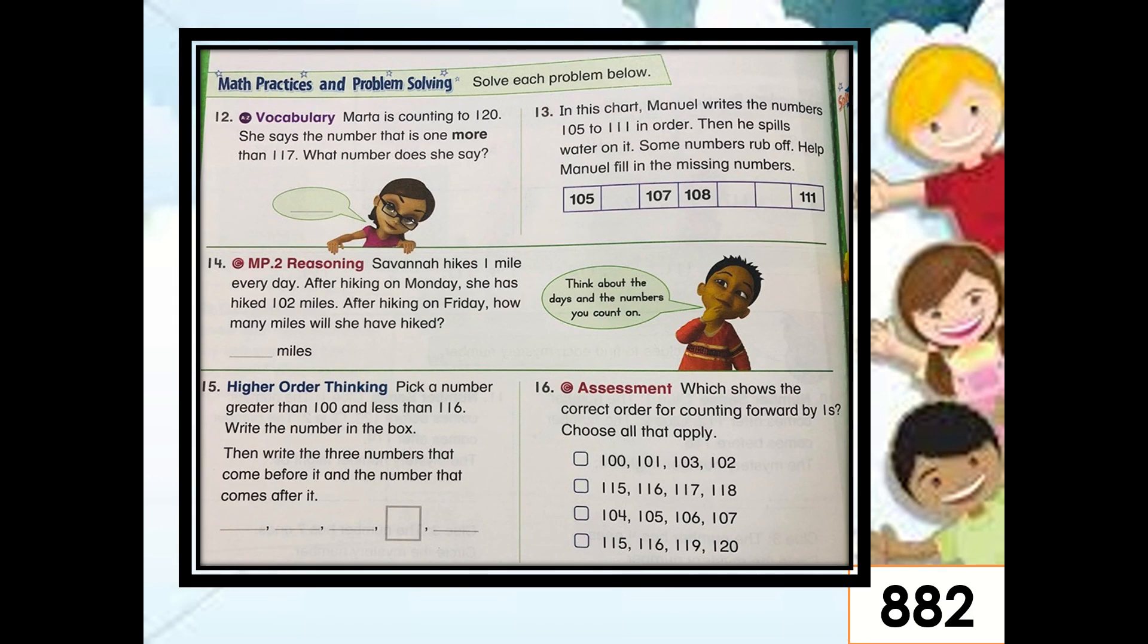Now, let us continue doing page 882. Number 12. Martha is counting to 120. She says the number that is 1 more than 117. Remember this term. One more than 117. So, what do you think is the number? Who can guess? Yes, you are correct. The number is 118. Because 118 is one more than 117. How about number 13? So, fill in the missing numbers from 105 to 111. Okay, who can tell me the correct answers here? Okay, you are correct. 106, 107, 108, then 109, then 110. Very good.